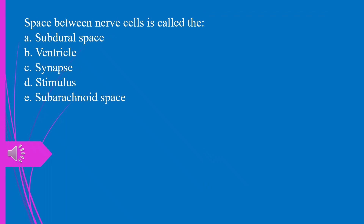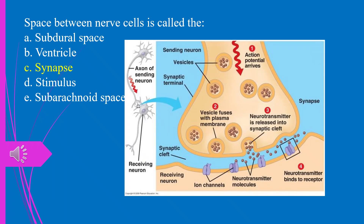Question 31. The space between nerve cells is called the: a) subdural space, b) ventricle, c) synapse, d) stimulus, e) subarachnoid space. The answer is c, synapse.